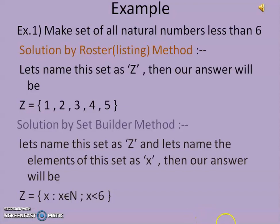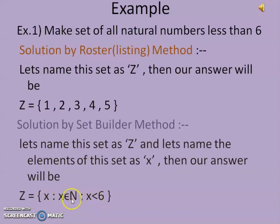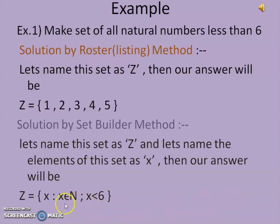If we suppose x = 2, it also satisfies these two conditions, so 2 will also come into this set. Similarly for x = 3, 4, and 5 — these two conditions are satisfied. But if we suppose x = 6, x = 7, or any other number, these two conditions are not satisfied. So only 1, 2, 3, 4, and 5 will be elements of this set.